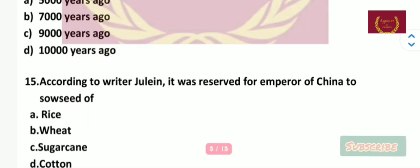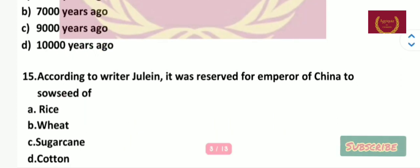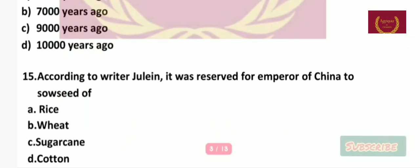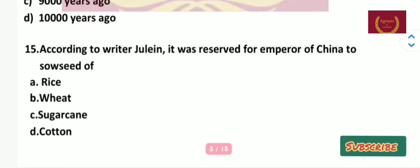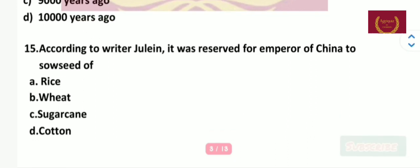Question number 15: According to writer Julian, it was reserved for the Emperor of China to sow the seed of — rice, wheat, sugarcane, or cotton? The right answer is rice.